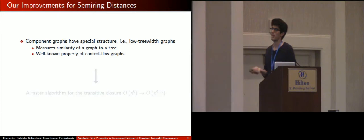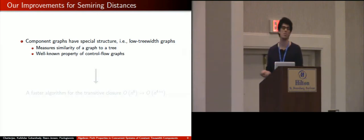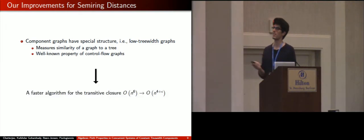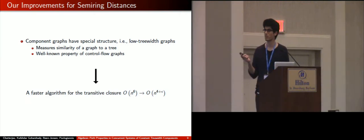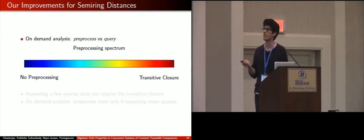Our work provides some algorithmic improvements for this problem by assuming that the component graphs have some special structure, in particular they are low tree width graphs. Now, tree width is a quantity, a positive integer that measures how similar a graph is to a tree, and we know that control flow graphs of most programs have typically small tree width, which means that they look to some extent like trees. Now, exploiting this property, our first contribution is a faster algorithm for computing the transitive closure. In particular, we can do so for two components in almost quartic time instead of hexic time. And the second contribution is to show that we can exploit this tree width to obtain on-demand analysis.